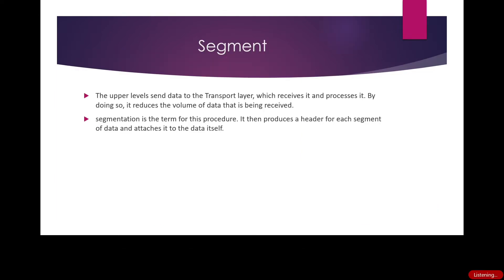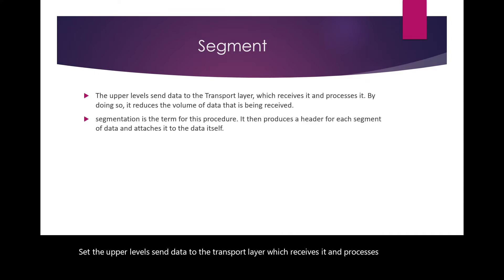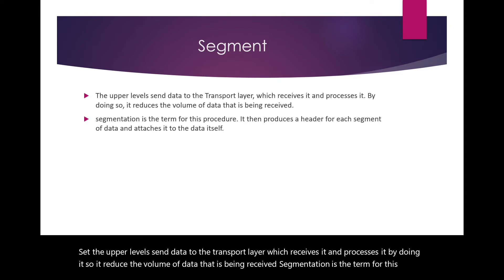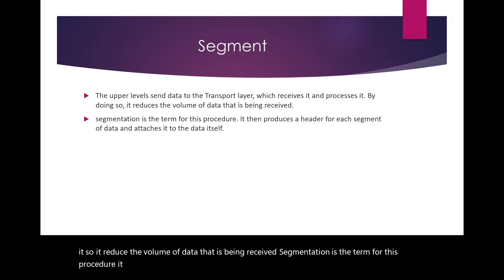Segment: The upper levels send data to the transport layer, which receives and processes it. By doing so, it reduces the volume of data being received — this process is called segmentation. It then produces a header for each segment of the data and attaches it to the data itself.